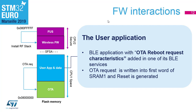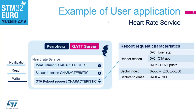Consider a simple example: a heart rate application. It's a standard Bluetooth SIG service with two characteristics — the measurement (actual heart rate value sent to the phone or wrist health meter) and a characteristic specifying the sensor position on the body. To integrate OTA into this service, we add an OTA reboot request characteristic.